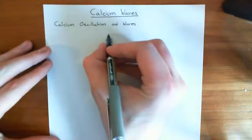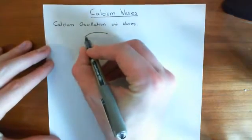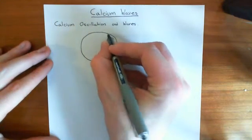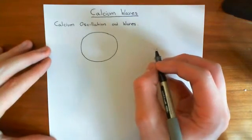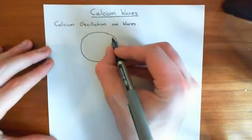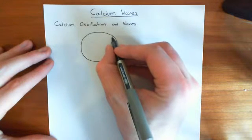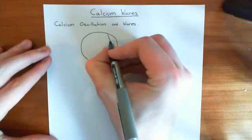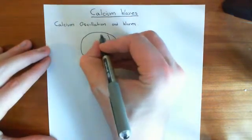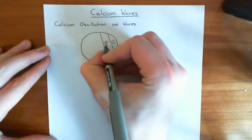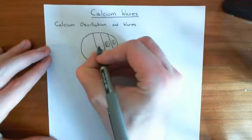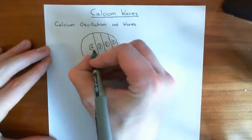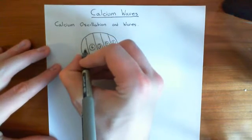Let's start with what a calcium wave is. If you have a cell, a calcium wave means that you're starting at one end of this cell and calcium is going to go up. Let's divide the cell up into pieces — region one, region two, region three, region four, and region five. This is just a cartoon to get the concept across.